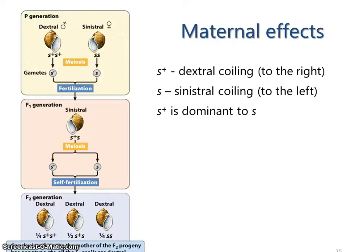Let's say we have snails. They can have their shell coiled to the right — dextral coiling — which is the wild type dominant situation, or they could be coiled to the left — sinistral coiling — which is caused by a recessive allele.